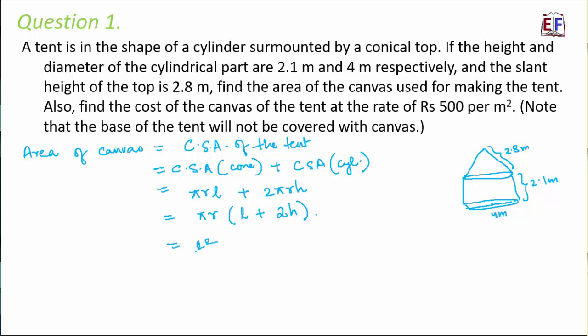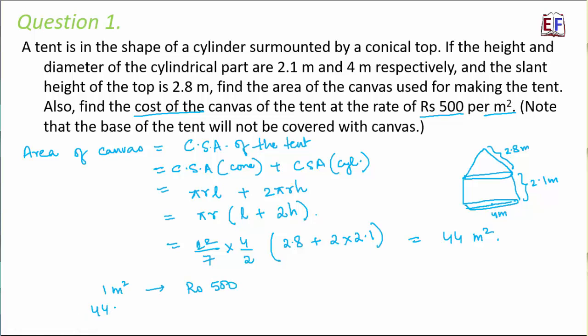π is 22/7, diameter is 4 meters so radius is 2 meters, slant height l is 2.8 meters, and height h is 2.1 meters. When you calculate, the area of the canvas comes out to 44 square meters. Now the question says the rate is ₹500 per square meter, so the cost would be 500 × 44 = ₹22,000. That is the cost of the tent.